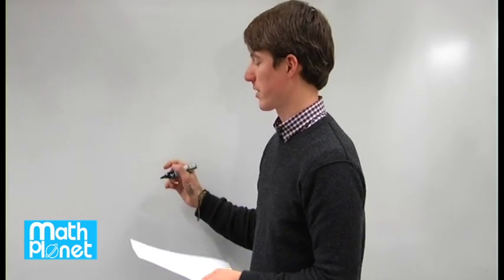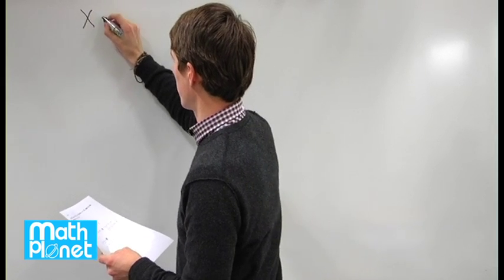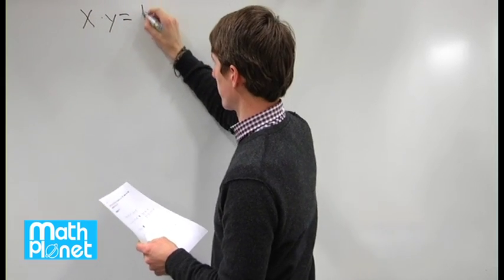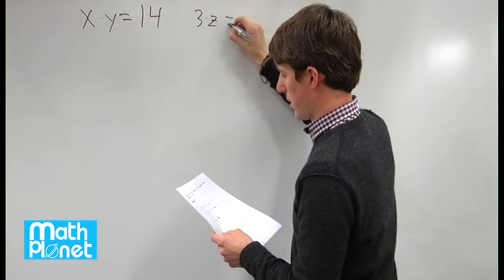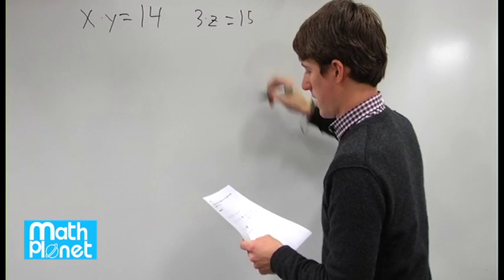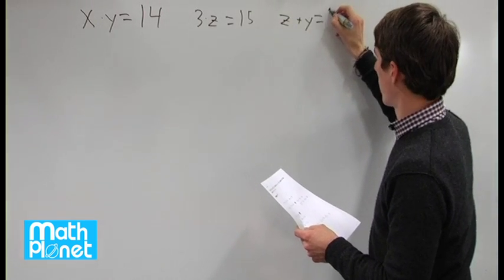Here we have three equations and three unknowns, a system of equations of three equations and three unknowns. We have x times y is equal to 14, we have 3 times z is equal to 15, and we have z plus y is equal to 12.